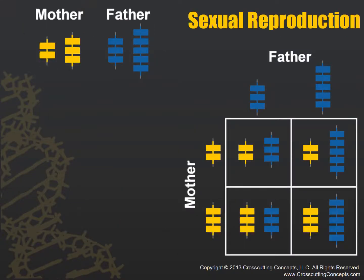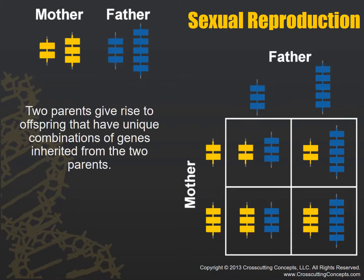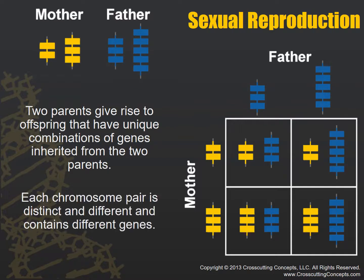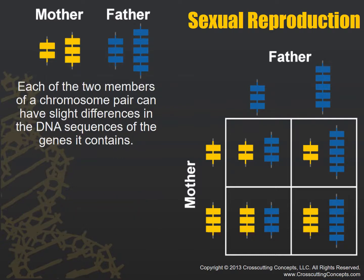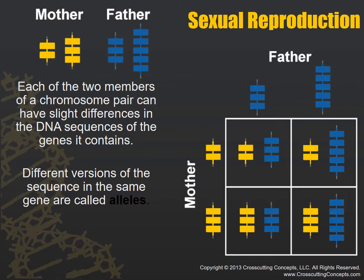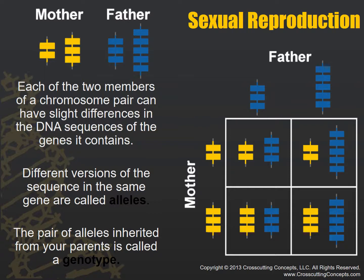In sexual reproduction, two parents give rise to offspring with unique combinations. Each chromosome is a pair and they are sorted individually, as seen in this Punnett square. Each of the two members can have slight differences in DNA sequences — for example, the mother has a two and a three, where the father has a three and a four or five. Different versions of the same sequence in the same gene are called alleles. A pair of alleles inherited from your parents is called your genotype.